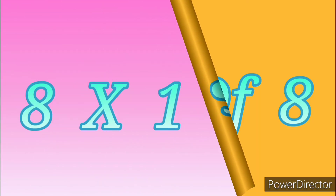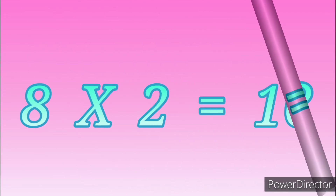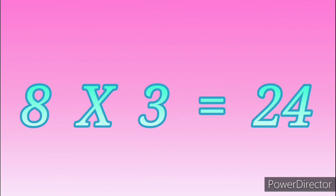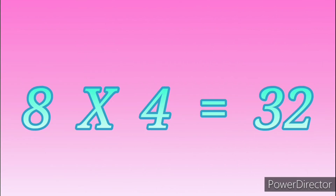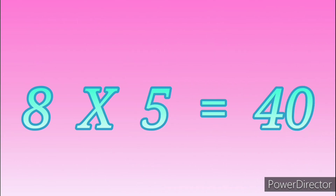Table of Eight. 8 ones are 8. 8 twos are 16. 8 threes are 24. 8 fours are 32. 8 fives are 40.